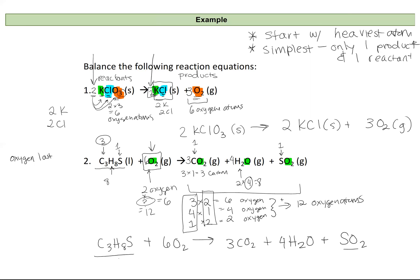The balanced equation is: C3H8S + 6 O2 → 3 CO2 + 4 H2O + SO2. For C3H8S and SO2, I can choose to write a coefficient of one in front or omit it, since it's redundant — if it's written in the equation, it's implied to be there. We typically omit the coefficient of one.